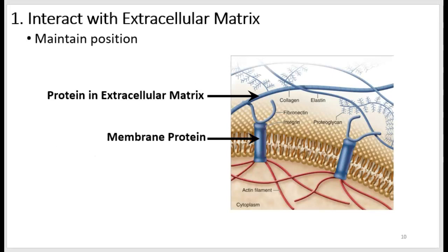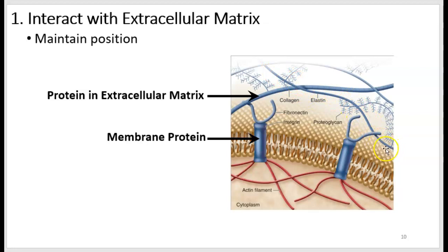Here is an example of the cell membrane protein interacting with the extracellular matrix to keep a cell in position. The membrane protein is labeled with an arrow and is blue. Notice that it is adhered to some collagen fibers, and another one is adhered to some elastin fibers. Those are outside the cell and form a network to keep cells in position within tissues.